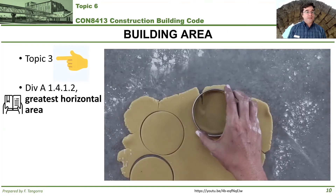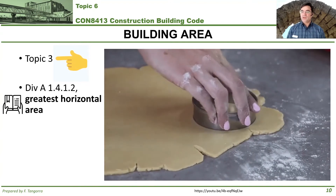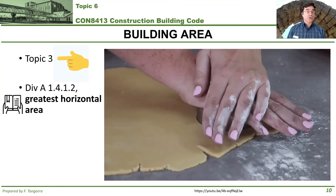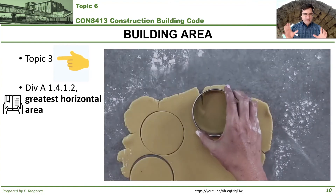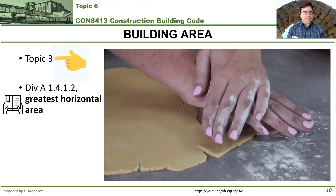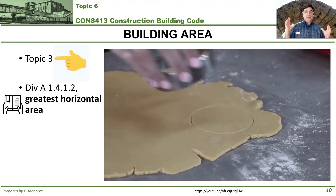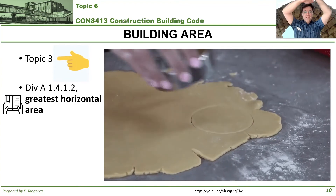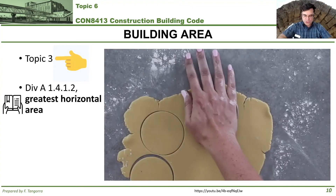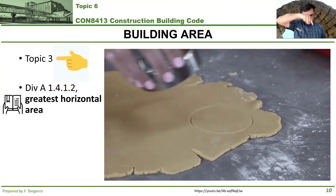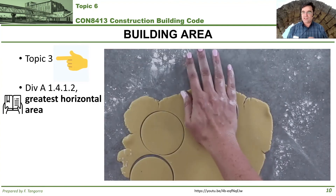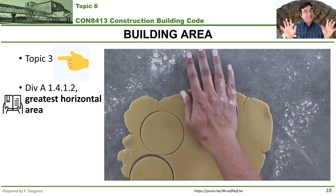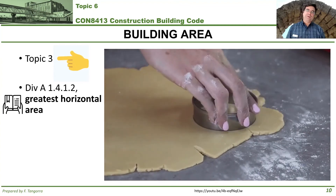Now let's move on to the second building characteristic: building area. This was previously discussed under topic three, where I gave you the cookie cutter analogy — building area is defined as the largest horizontal area you get when you take your building, squish it all the way into the ground, and the footprint left in the ground is the building area. There's really not much more to add to that.